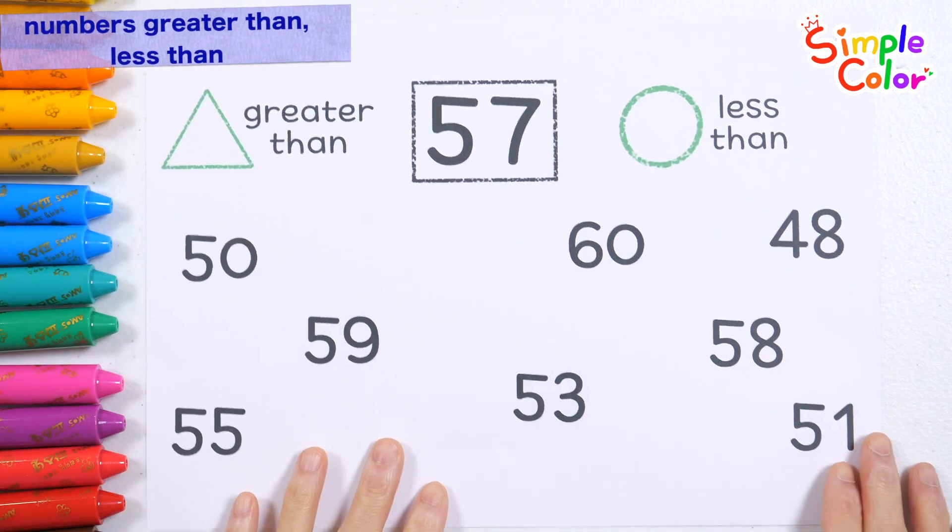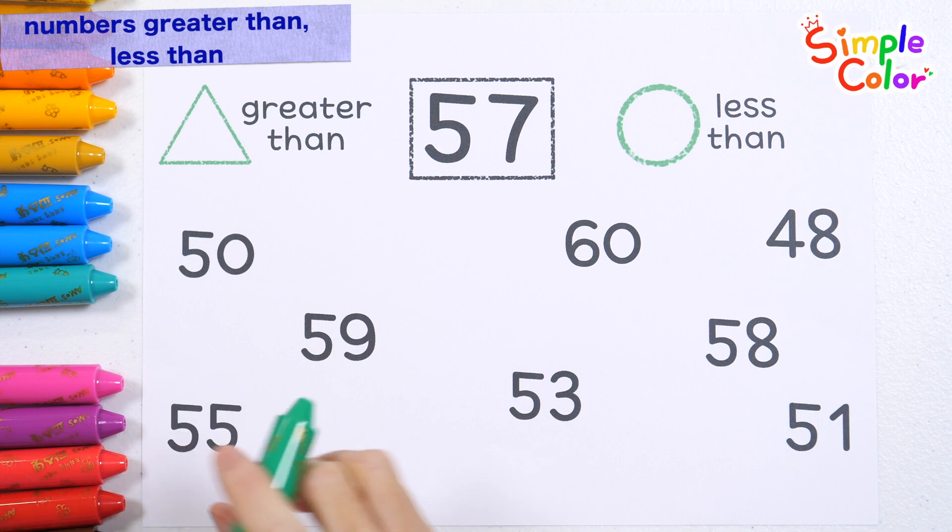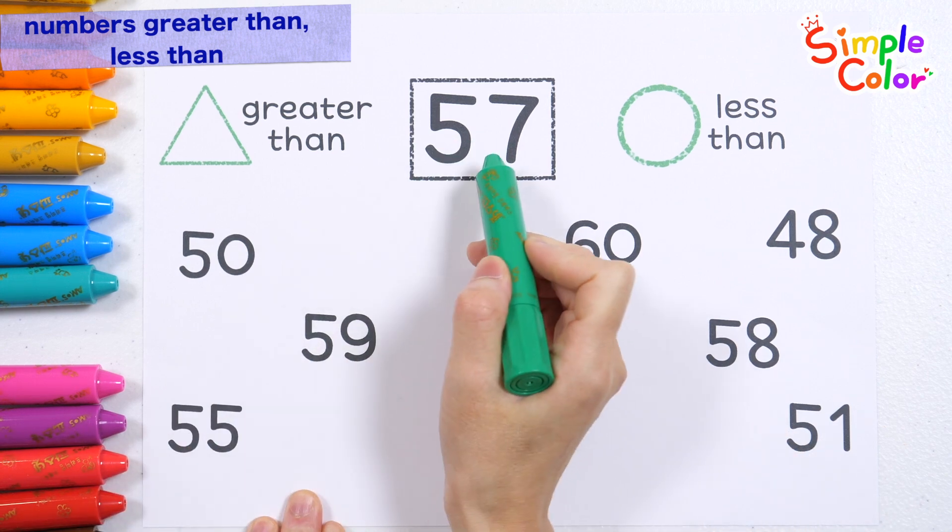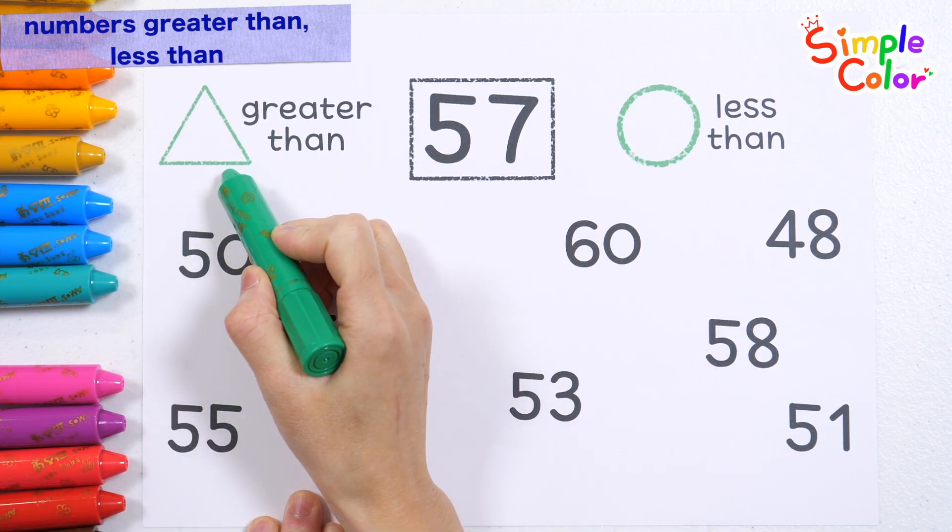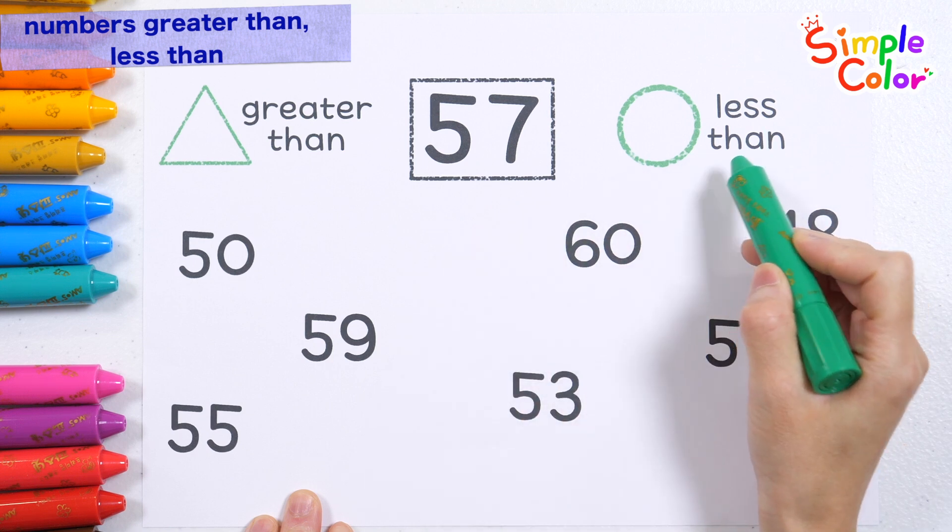Shall we learn the magnitude of numbers? How? Shall we draw a triangle for numbers greater than 57 and a circle for numbers less than 57?